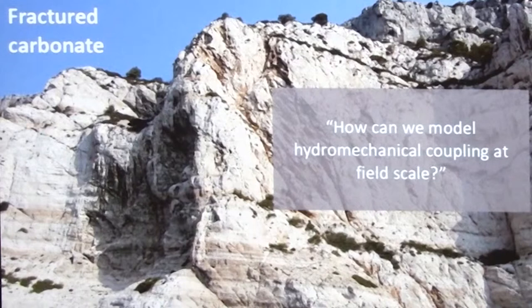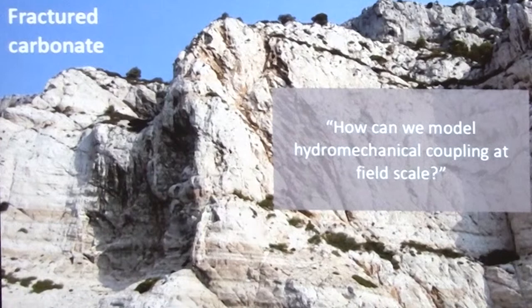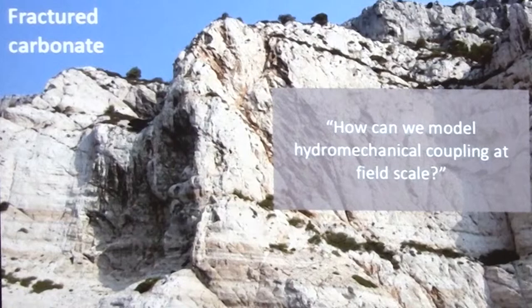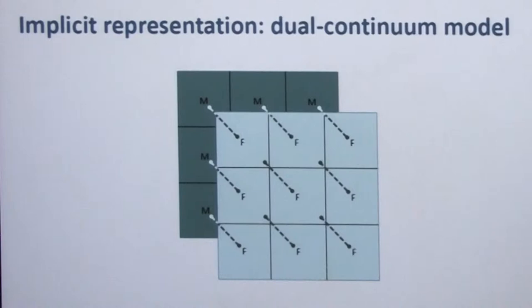Our research is focused on field scale, but trying to model these using explicit methods such as discrete fracture networks, for example, is computationally impractical, and we might be constrained by our data as well. So instead, we use an implicit representation called Dual Continuum Models.